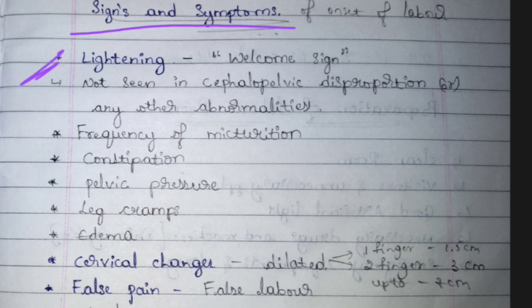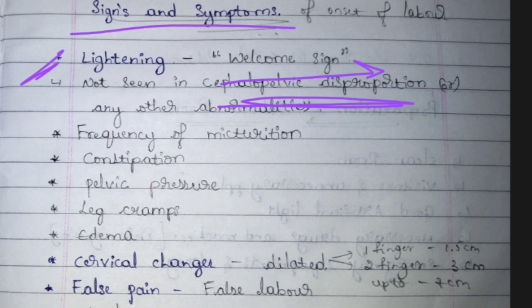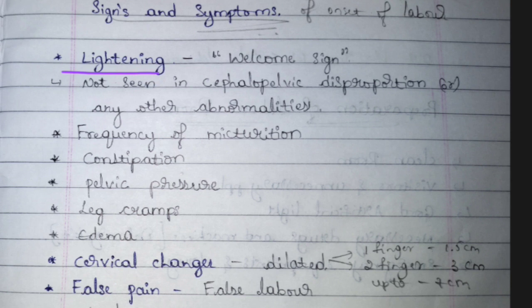The signs and symptoms of onset of labor: the first and very important one is lightening, also known as the welcome sign. This sign is not seen when there is an abnormality in the pelvis — that is, cephalopelvic disproportion. Lightening means you feel very light: at nine months you carry the baby and feel very heavy, but near delivery the baby moves downward so you feel much lighter in the stomach area.